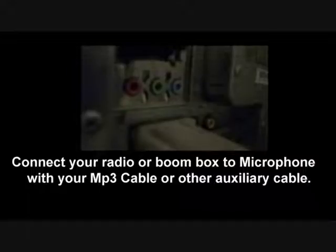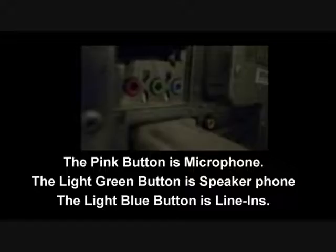Next, look on the back of your computer and connect from your radio or boombox with your MP3 cable or other auxiliary cable. You'll see the jacks on the back. The pink is microphone, the green is speaker output, and the blue is line in. The yellow one at the bottom is the video jack. To repeat: the pink jack is microphone, the light green jack is speaker output, and the light blue jack is line in.